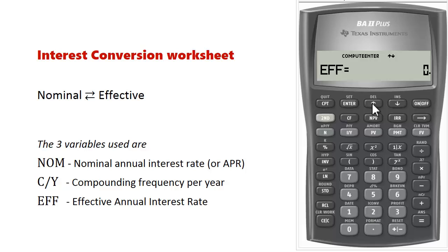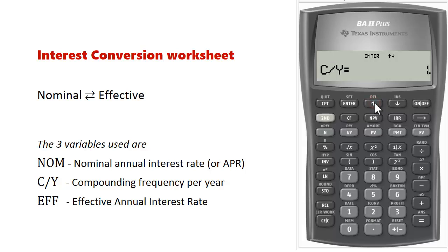Since there are only three variables, navigating through them is pretty straightforward. Pressing the up arrow once is equivalent to pressing the down arrow twice and vice versa. So pressing the up arrow once from nominal goes straight to CY, and pressing the down arrow twice also goes to CY.